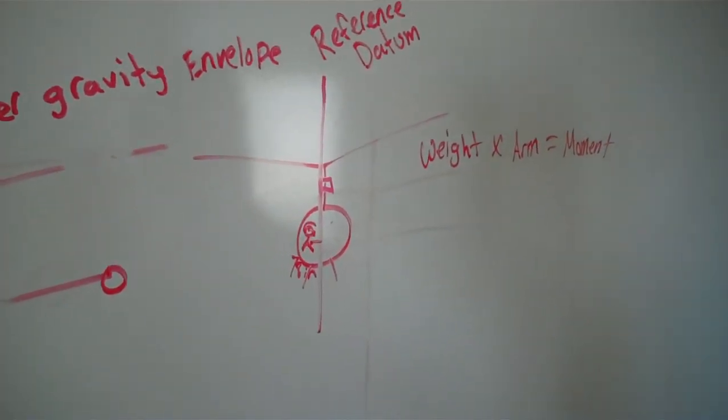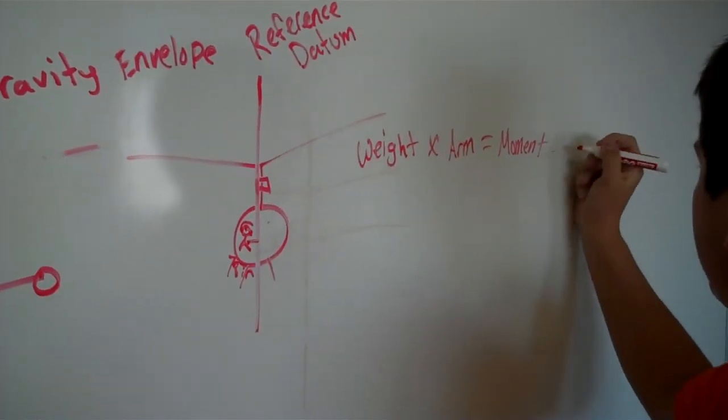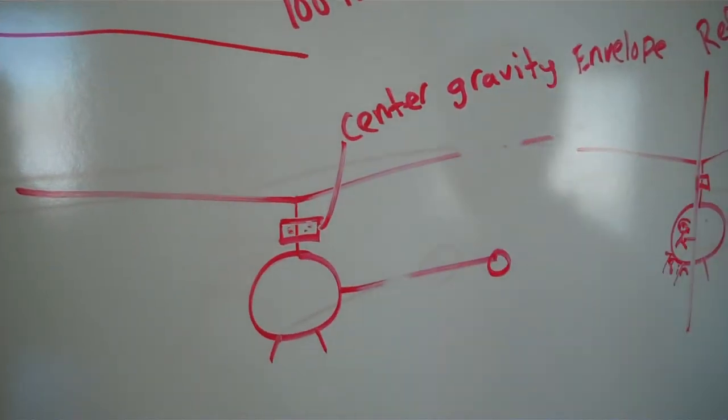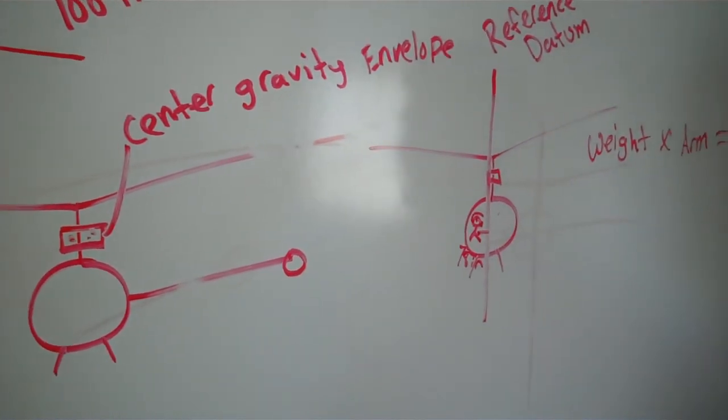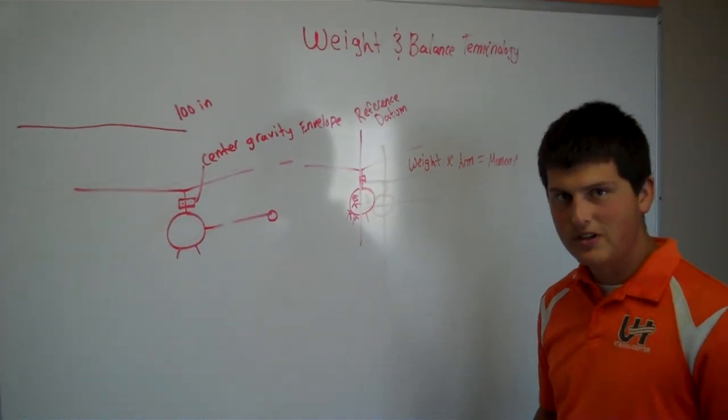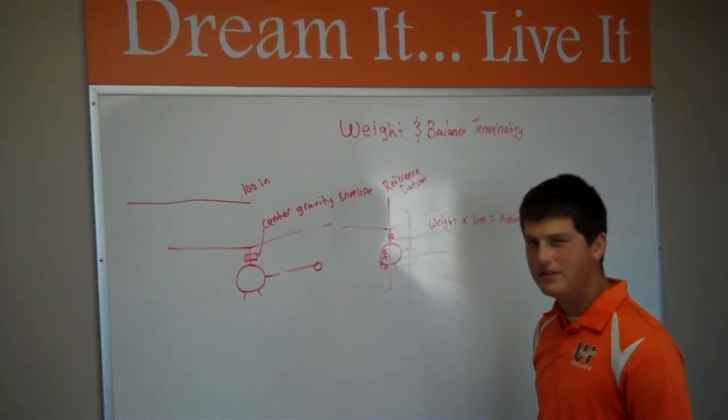And that is, well, we'll figure that out. And then we plot our points inside the center of gravity envelope, hopefully. And if it's inside, then we are okay to fly. Done.